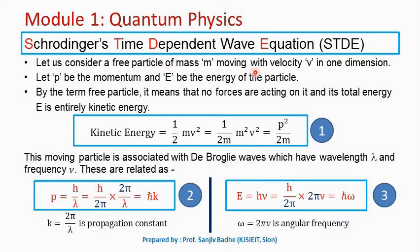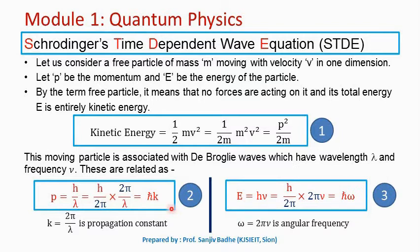This moving particle will have a wave associated with it, and the wavelength of that wave is given by λ = h/P. Therefore, we can write P = h/λ. Multiplying and dividing by 2π, h/2π is ℏ and 2π/λ is k, the propagation constant. So this momentum can be represented as ℏk. Let us call this equation number 2.